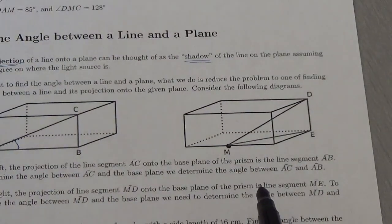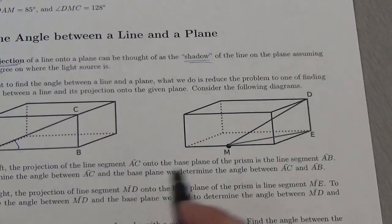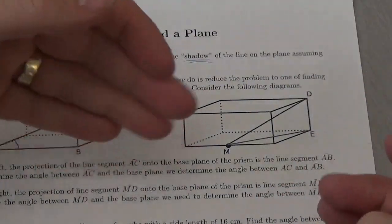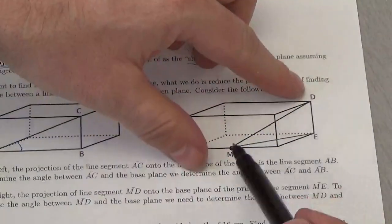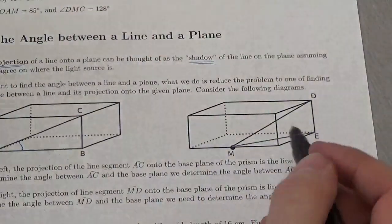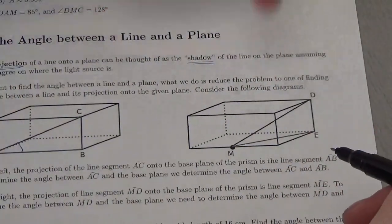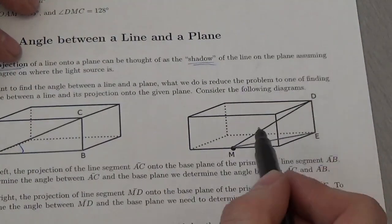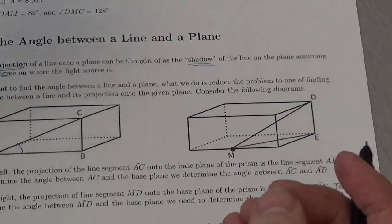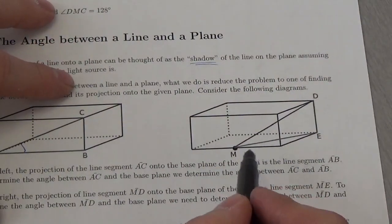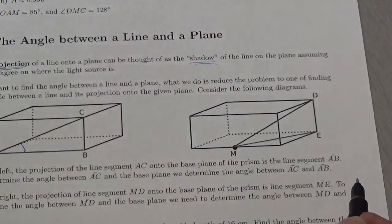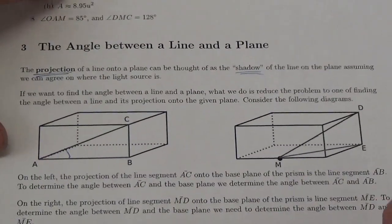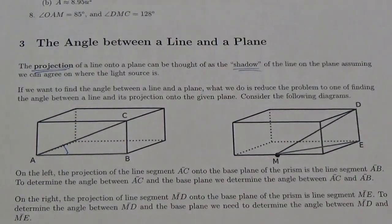Over here, we're going to find the projection of MD onto the base plane — the midpoint up to D projected onto the base plane. If I want to figure out what the angle is between here and the base plane, I need that projection. When you shine that line straight down, the shadow you're going to get is from M to point E, because E is directly below D. This line segment is essentially the closest line segment in this plane to that line segment. Essentially, that angle is the smallest angle that it could possibly be. So with that in mind, let's move ahead and answer some questions.